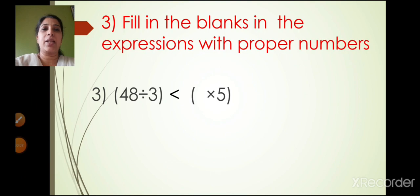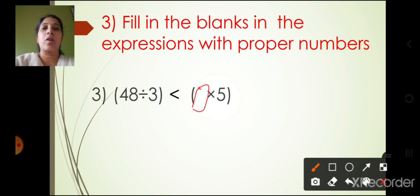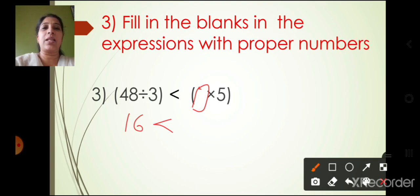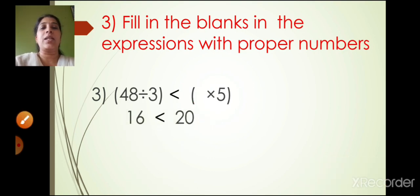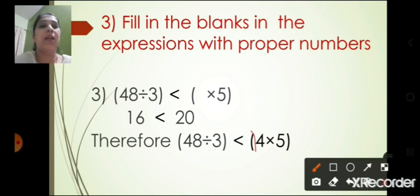The third one: 48 divided by 3 is smaller than box into 5. Now 48 divided by 3 is 16. We need a number in the 5-times table that is greater than 16. Five twos are 10, five threes are 15 — both smaller than 16. Four fives are 20, and 20 is greater than 16. Therefore 48 divided by 3 is smaller than 4 into 5. The answer in the box is 4.